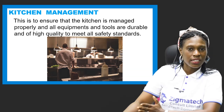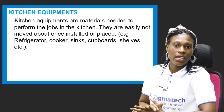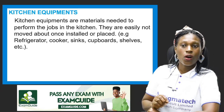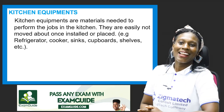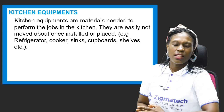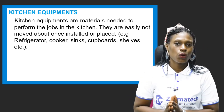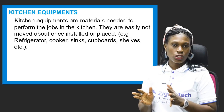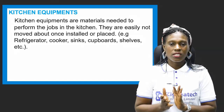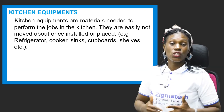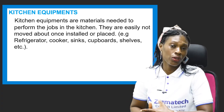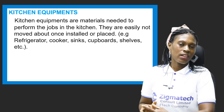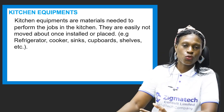Now let's look at kitchen equipment. Kitchen equipment refers to materials needed to perform jobs in the kitchen. They are not easily moved once they are installed or placed. When your kitchen equipment is installed, it stays there and you don't move it around. Examples include your refrigerator, cooker, sinks, cupboards, and shelves. When placed, they remain there for a period of time before you get a new one.